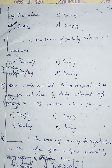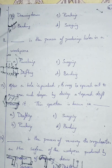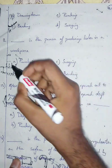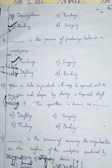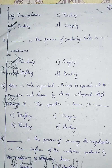Question number twelve: dash is the process of producing holes in a workpiece. Options: A punching, B drifting, C swigging, D bending. Punching is the process of producing holes in a workpiece — just as a punching machine puts holes in paper, we also punch holes in metal. So I'm going with option A, punching.